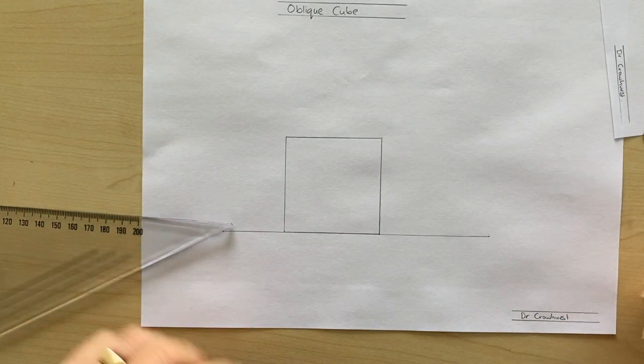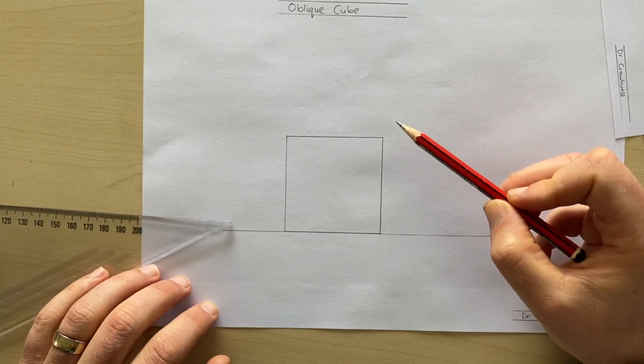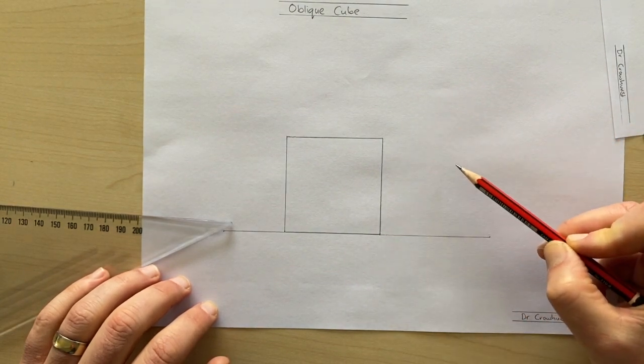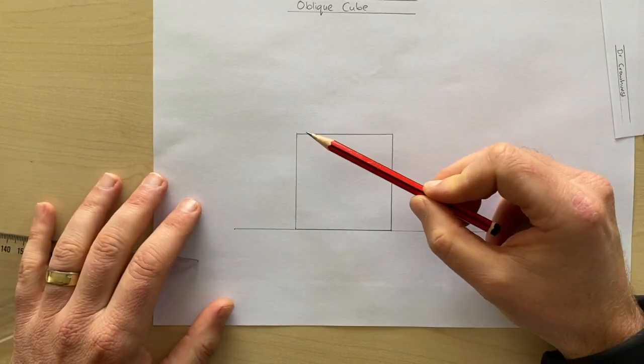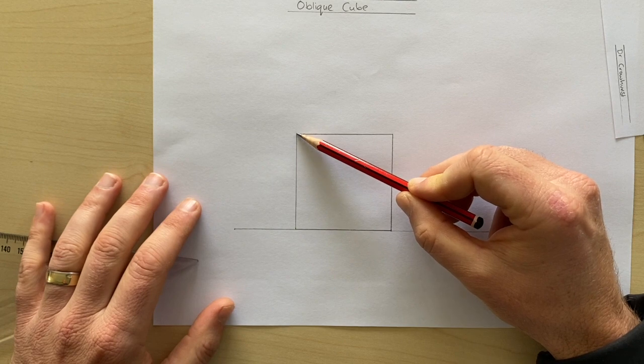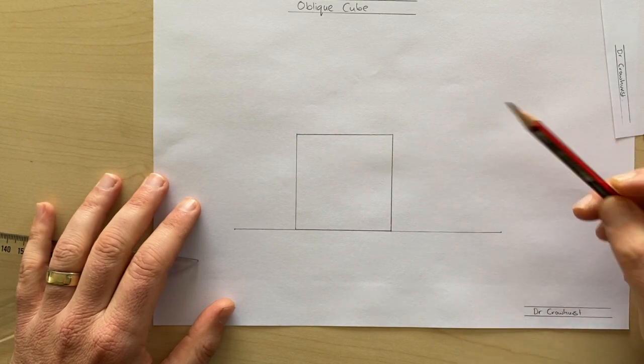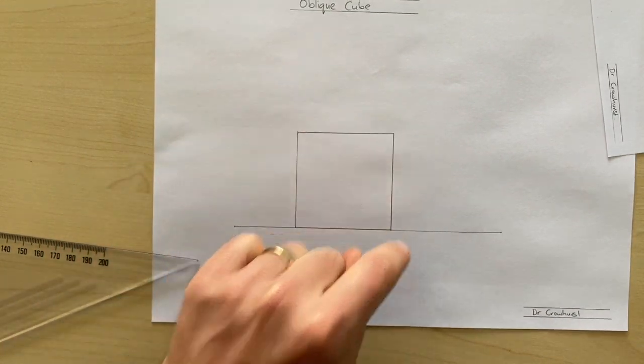The next step is to draw the depth lines. Now as you know, in oblique drawing the depth lines are all at 45 degrees. I have drawn the front face at six centimeters, so I'm going to do exactly the same with the three depth lines that come off those corners.